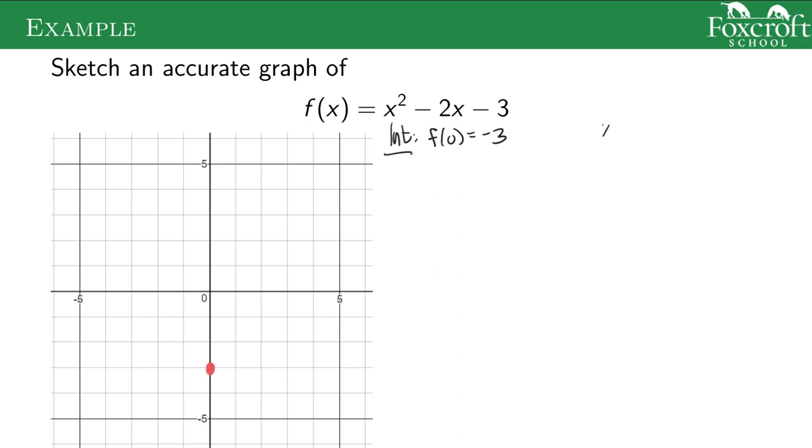You can also set my equation equal to 0 and solve it. So I have positive 3 and negative 1. Those are my x-intercepts. So now my intercepts are done.